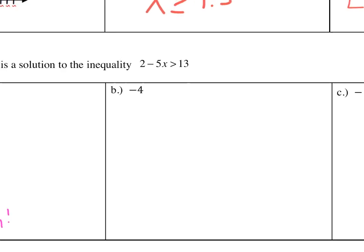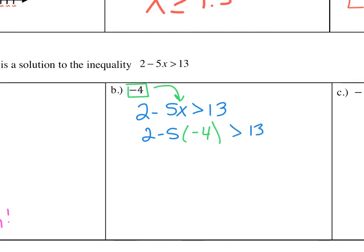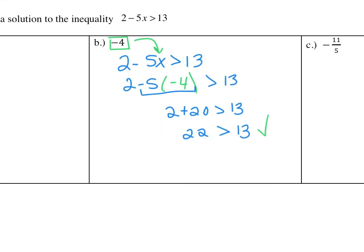We're going to follow the exact same setup. We want to figure out if negative 4 is a solution, so we always rewrite our inequality: 2 minus 5x greater than 13. We substitute negative 4 in for x, giving us 2 minus 5 times negative 4 greater than 13. Negative 5 times negative 4 is 20, so we're really dealing with 2 plus 20 greater than 13. Well, 2 plus 20 is 22, and 22 is greater than 13 — so yes, this is a solution.